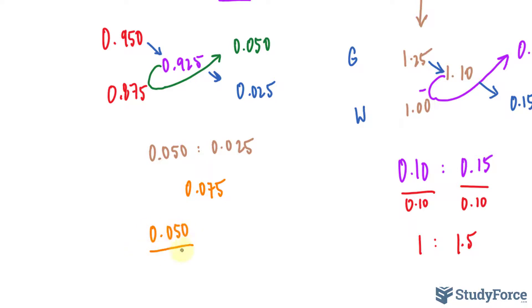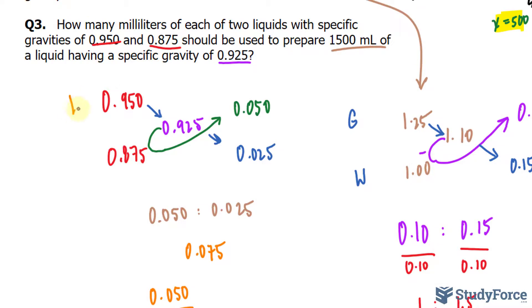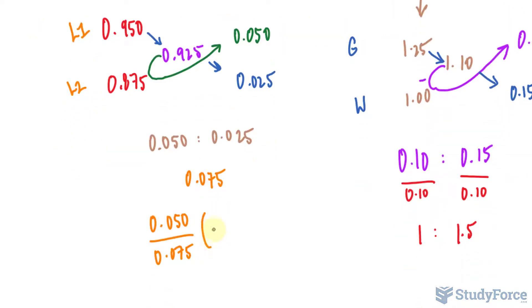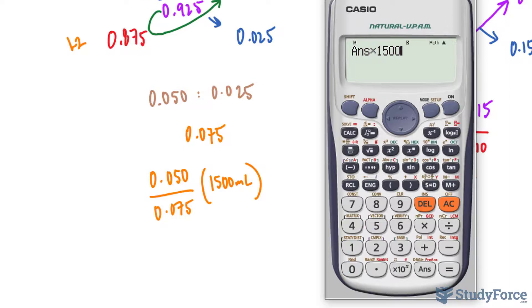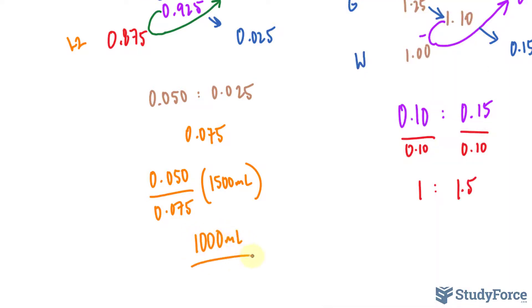I'll write down 0.050 over 0.075. That is for this liquid, we'll call it L1 and L2. Then I'll multiply this by 1,500 milliliters, which is what we want to prepare as a total. I'll take 0.050 and divide it by 0.075, and then I'll multiply this by 1,500, which is 1,000. We need 1,000 milliliters of liquid 1, and for liquid 2, it's what remains after the 1,000 is added, which is 500 milliliters. Now you can do it systematically the same way as we did here, where you take 0.025 over 0.075 times 1,500, and you will end up getting the same answer.